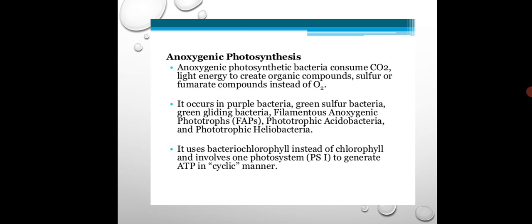As the name indicates, in anoxygenic photosynthesis there is no production of oxygen as a by-product. Instead, certain compounds like sulfur, organic compounds, hydrogen, or hydrogen sulfide are produced as by-products instead of oxygen.